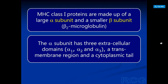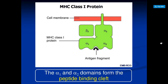The MHC class 1 proteins are made up of a large alpha subunit and the smaller beta subunit called beta-2 microglobulin. The alpha subunit has three extracellular domains — alpha 1, alpha 2, and alpha 3 — a transmembrane region, and a cytoplasmic tail. The diagram shows the MHC class 1 protein with its alpha 1, alpha 2, and alpha 3 regions along with the beta-2 domain. The antigen fragment is bound at the alpha 1 and alpha 2 region.